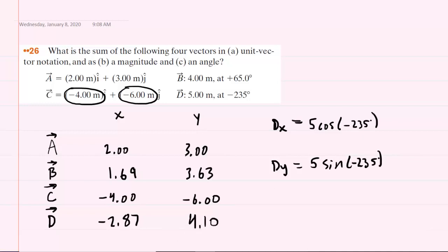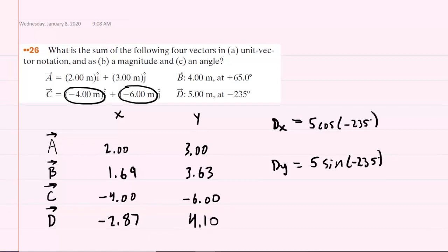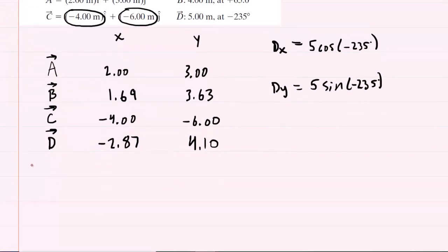Now, once you have the X and Y components of each of your vectors, you're going to find it useful to create another row that gives the sum of those components. So we're going to go ahead and we're going to add all four of the X components to get the sum, and then also add all the Y components to get their sum. And when we do that, we obtain the following values.